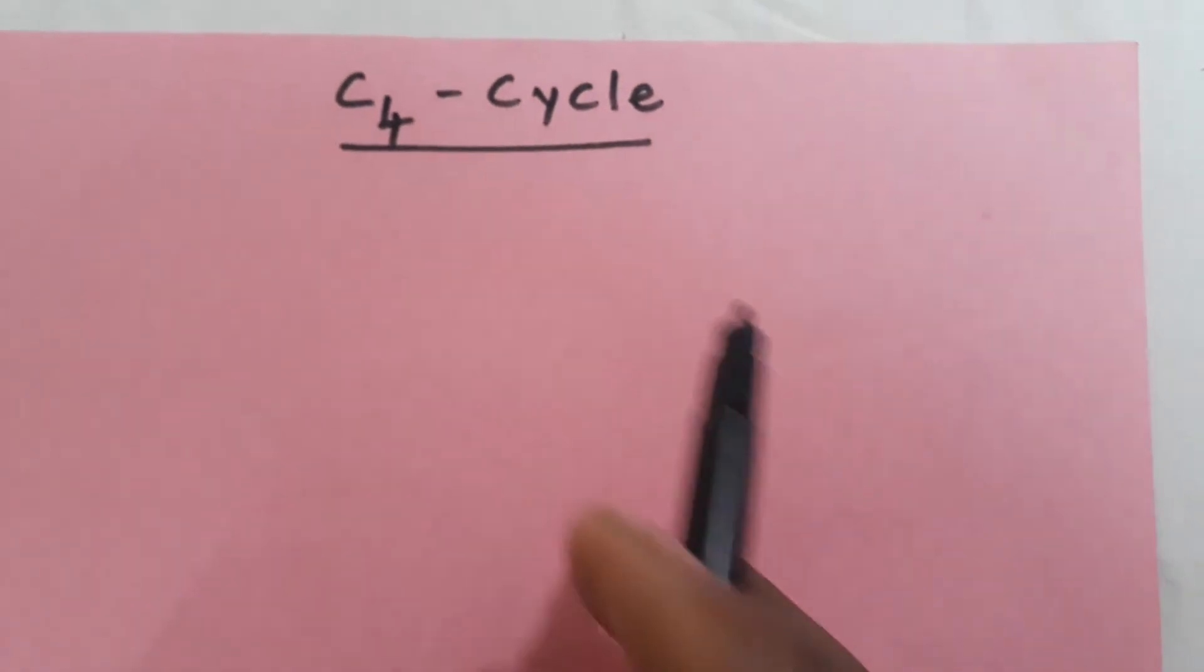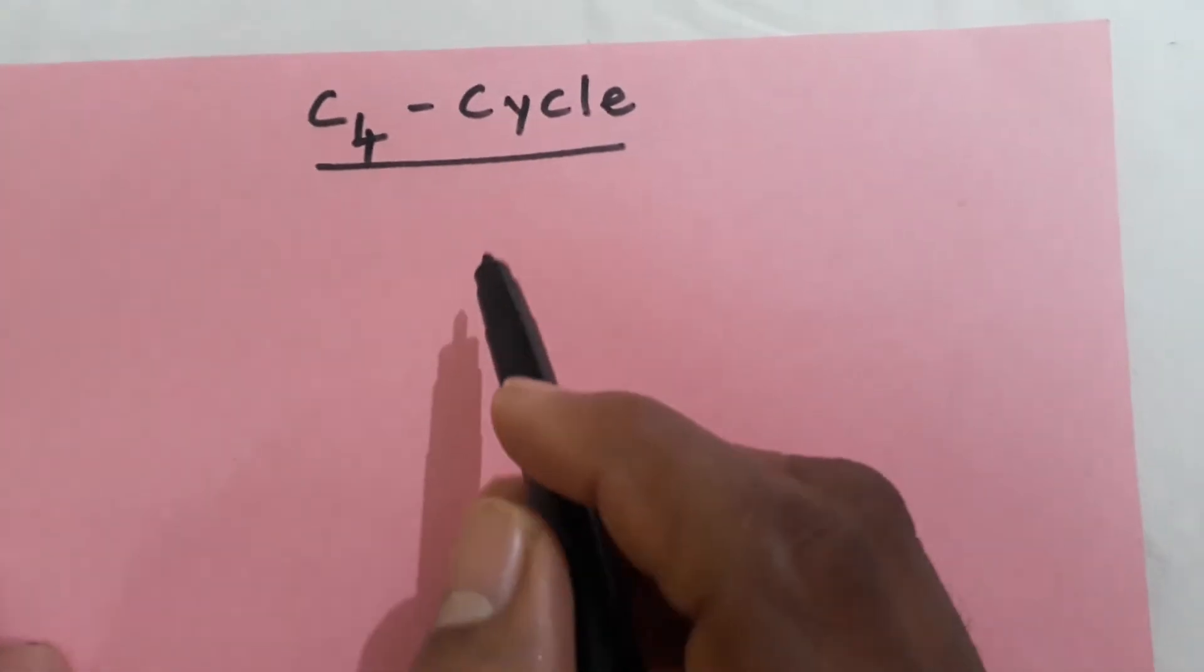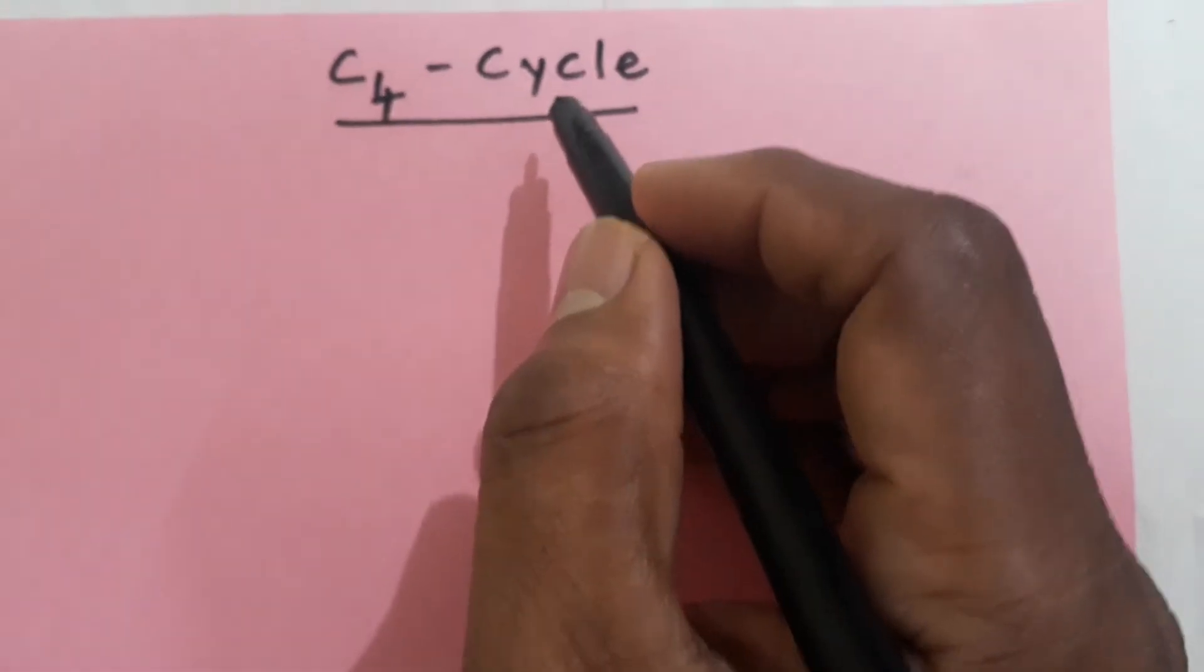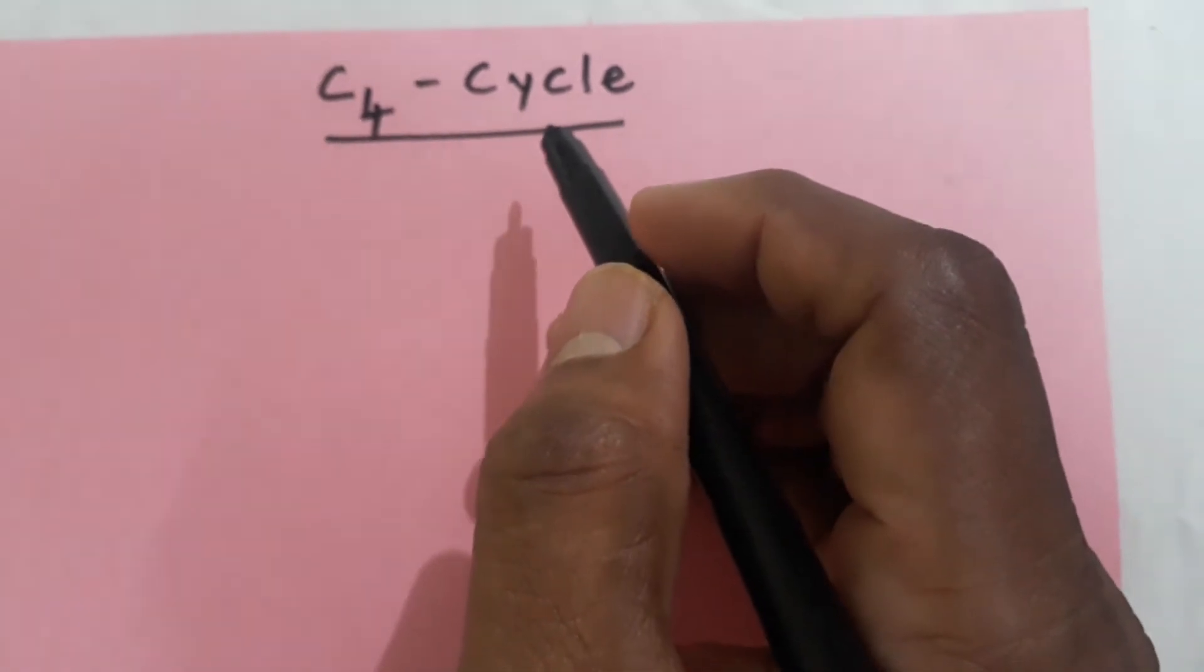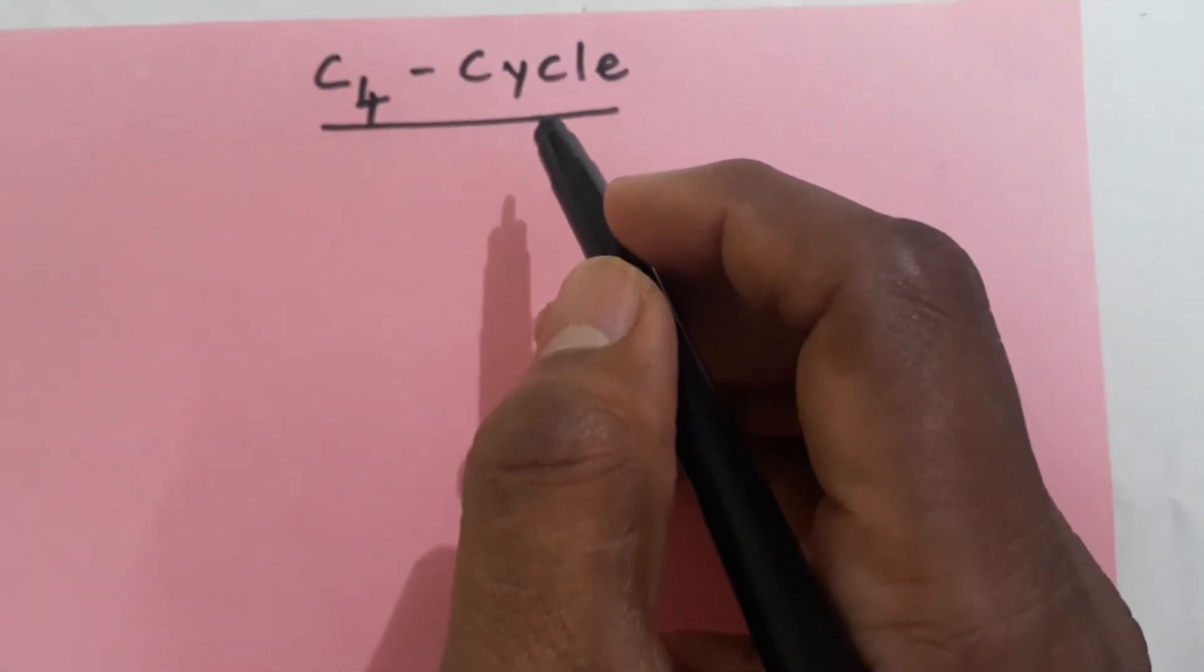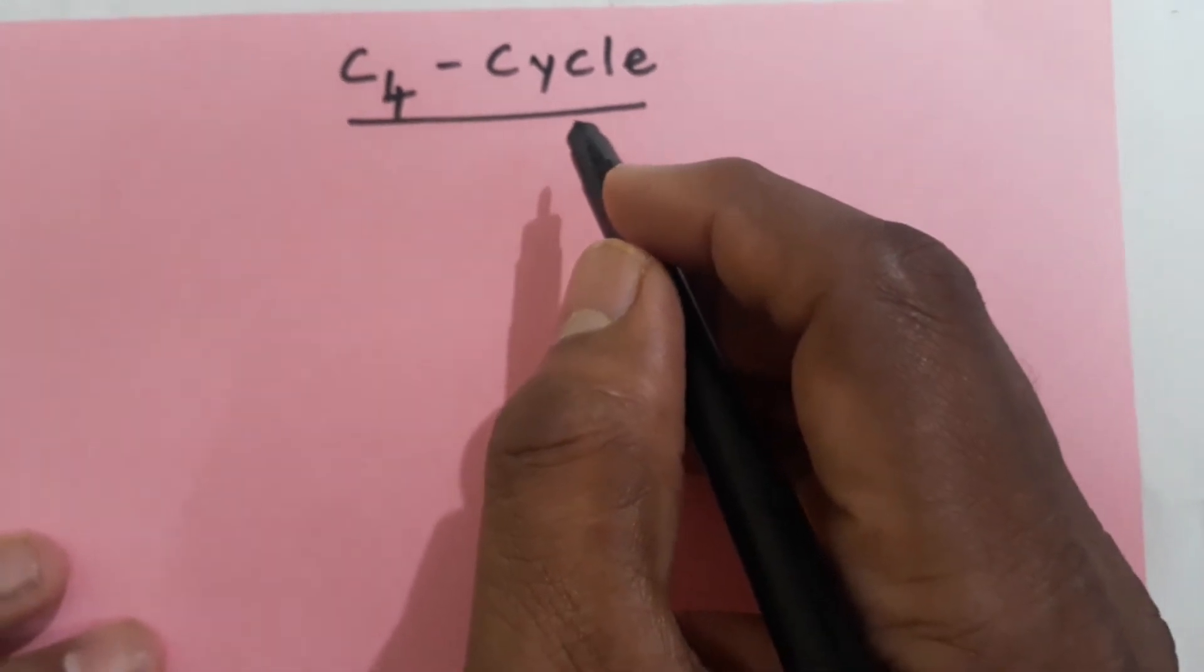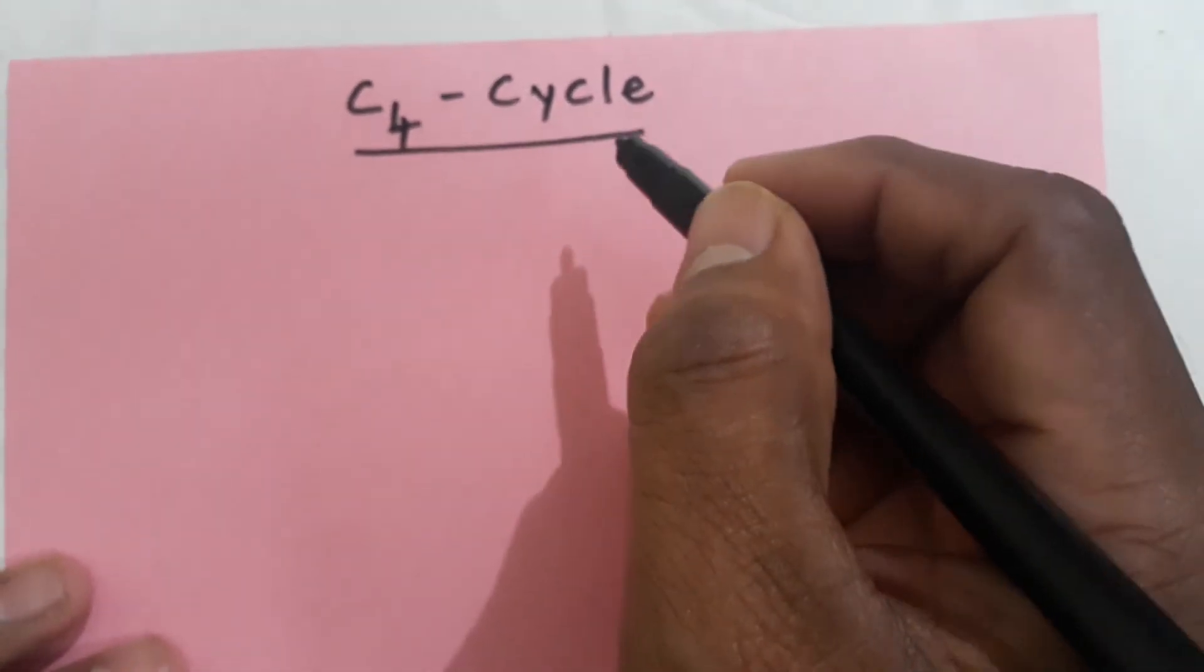Hi viewers, today we are discussing the C4 cycle. Why is it called the C4 cycle? In this pathway, the first stable compound is oxaloacetate, which contains 4 carbons. Therefore, the pathway is called the C4 cycle.